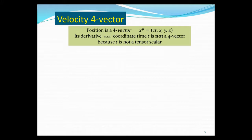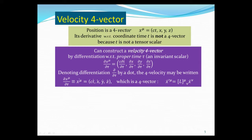Now we have the position vector, so let's talk about velocity. We'd like the velocity to also be a four-vector. The position is a four-vector, but if we differentiate with ordinary coordinate time t, we do not get a four-vector, because t is not a scalar — it's part of the four-vector. Instead, we differentiate with proper time tau, which is an invariant scalar. So x^mu differentiated with respect to tau should be a four-vector.